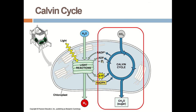The Calvin cycle is also sometimes termed as the dark reaction, but there is no concern of darkness for this cycle. Light sources are just not directly involved in this cycle. The outcome of the light reactions — ATP and NADPH — are both involved in CO2 fixation through this cycle, and sugar is formed. This cycle runs in the stroma part of the chloroplast.